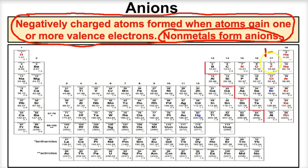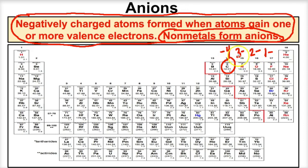For example, fluoride has a negative-one charge — it gains one electron. Group 16 — oxygen on down — gains two electrons and forms two-minus ions. Nitrogen, phosphorus, and arsenic gain three electrons. Carbon has a tendency to gain four electrons when it behaves as a nonmetal. So understand anions: negatively charged atoms formed when an atom gains one or more valence electrons.